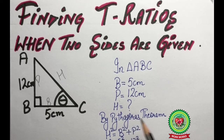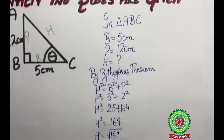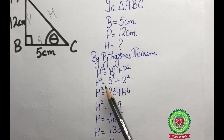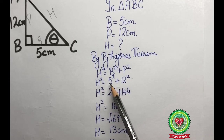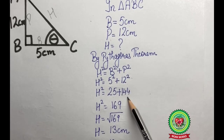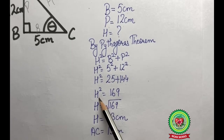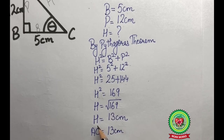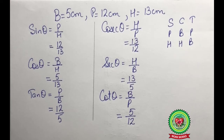So in triangle ABC: base = 5 cm, perpendicular = 12 cm, and the hypotenuse is missing. We apply Pythagoras theorem: H² = B² + P². Substituting, H² = 5² + 12² = 25 + 144 = 169. Taking the square root, H = 13 centimeters. Therefore AC = 13 centimeters.